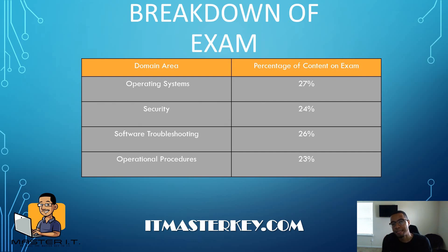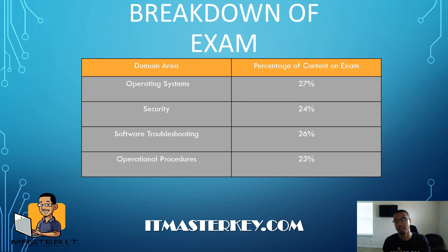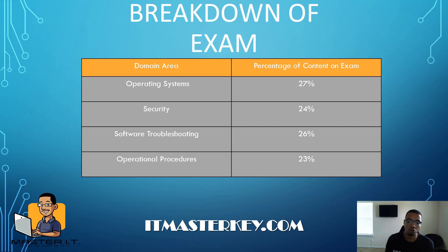These are the domains you need to focus on for this exam. Remember, 1001 and 1002 together make A+. If you're only 1001 certified, you still have another step to take. Both exams together make A+. The domains are: operating systems, security, software troubleshooting, and operational procedures.